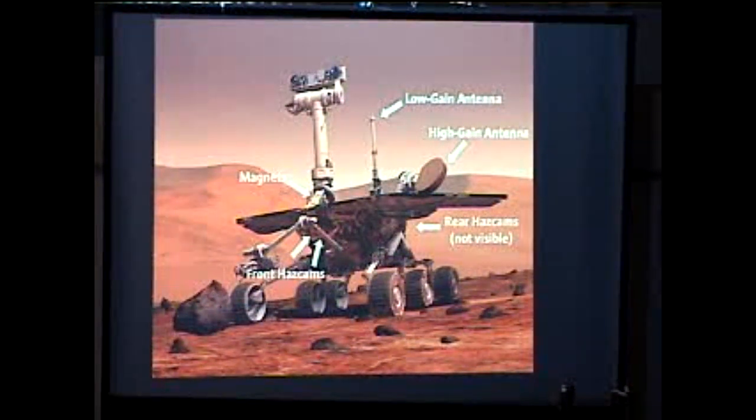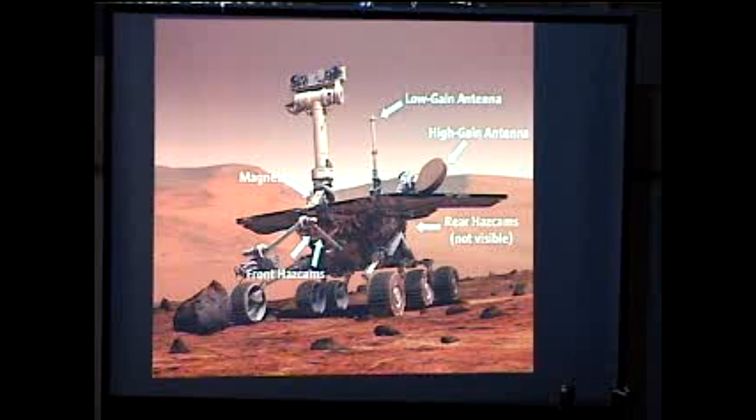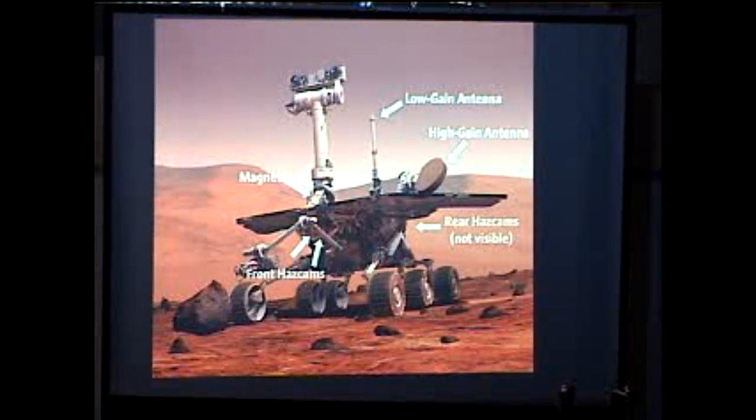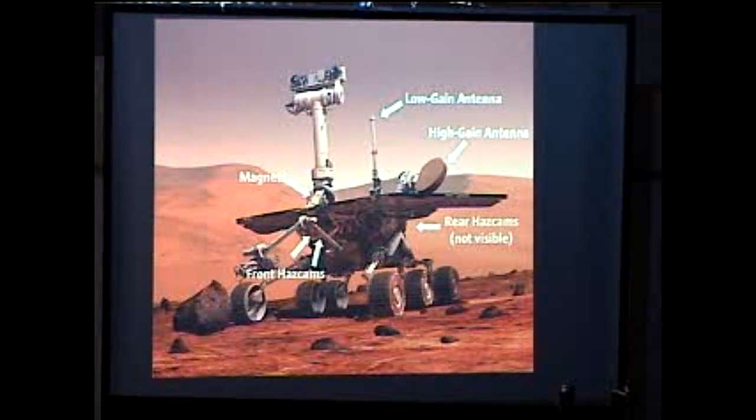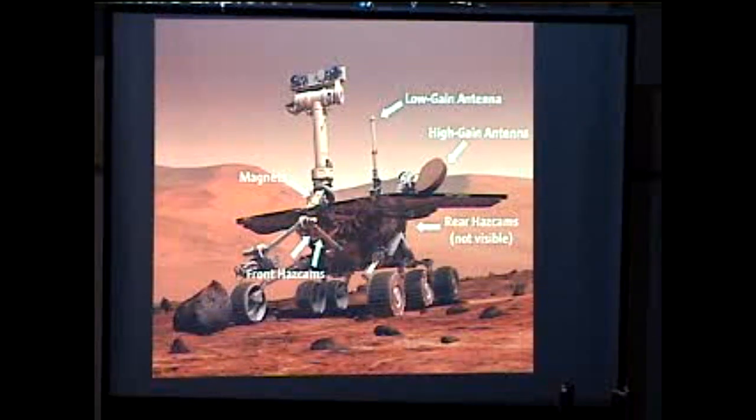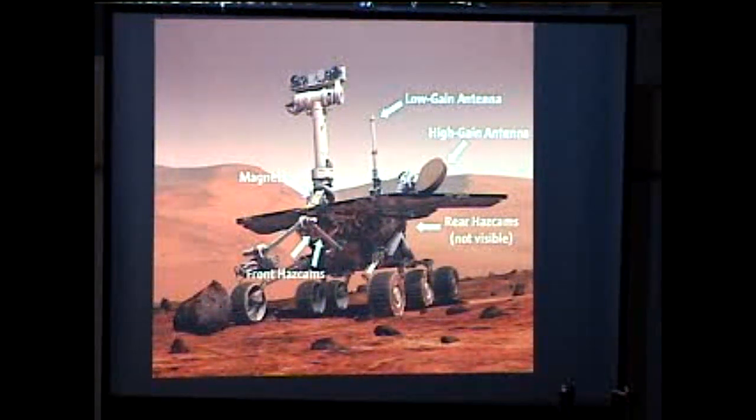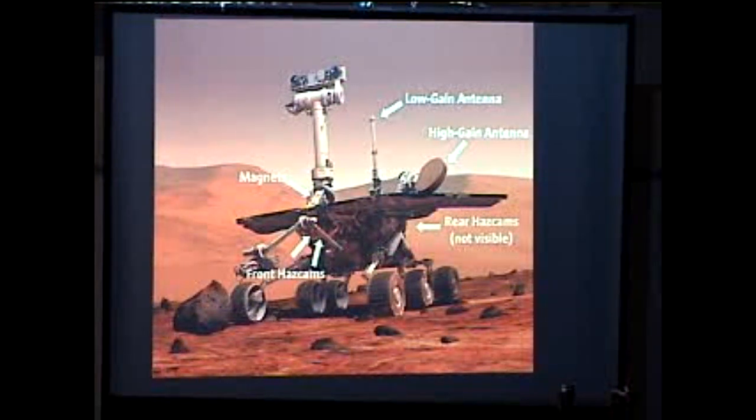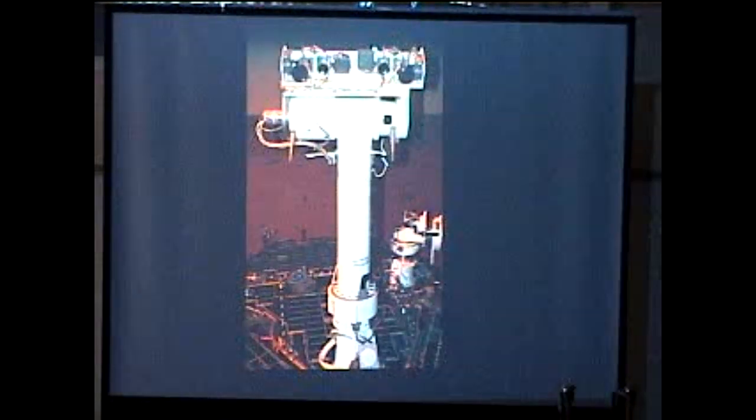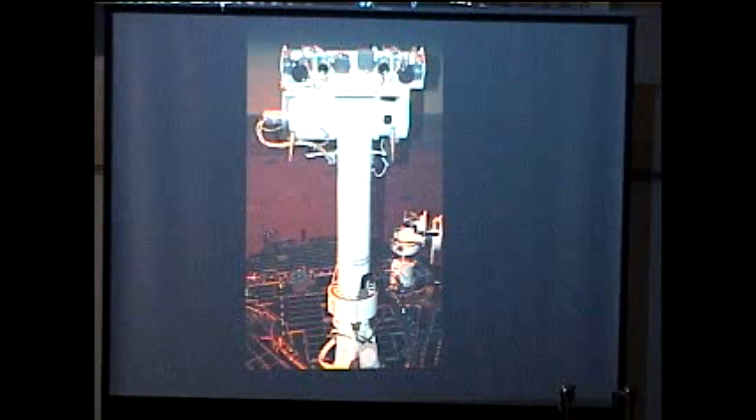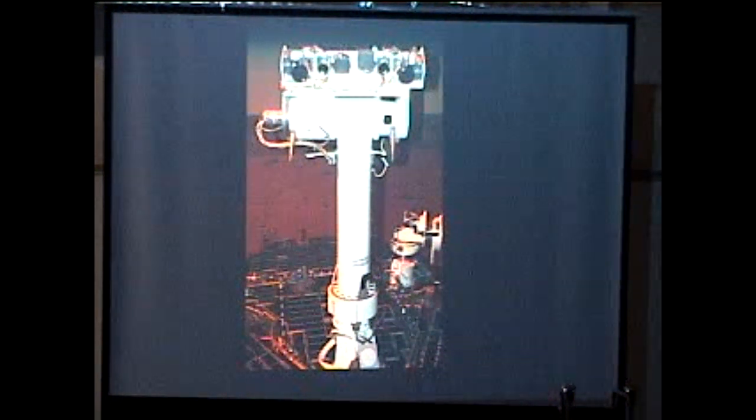Then also up there are some magnets. There's nothing special about them, they're just magnets on the front there. They would basically be used to collect magnetic dust, and then the rover could use its arm to analyze that magnetic dust. Now, going up to the poll thing over there, that is actually what's called the pan cam mast assembly or PMA. There are basically a lot of cameras on top here.